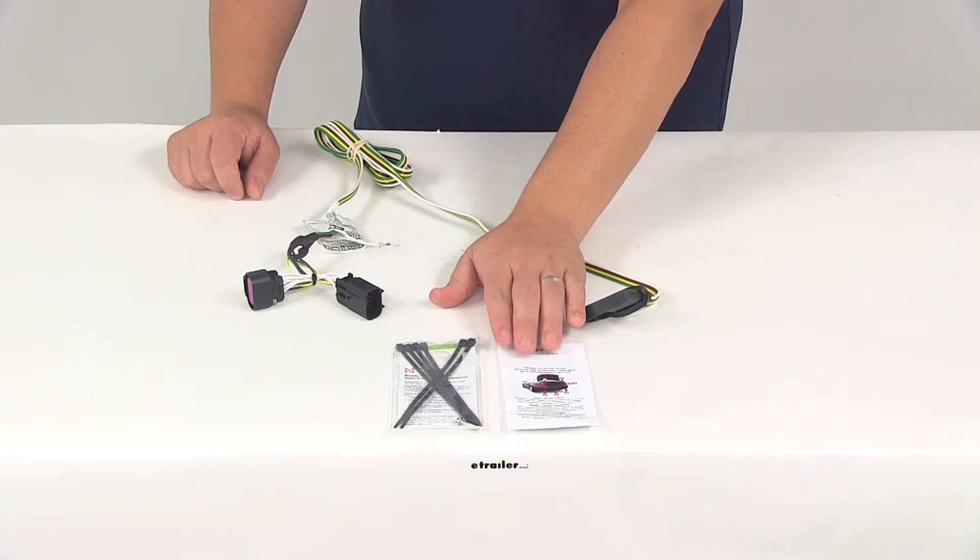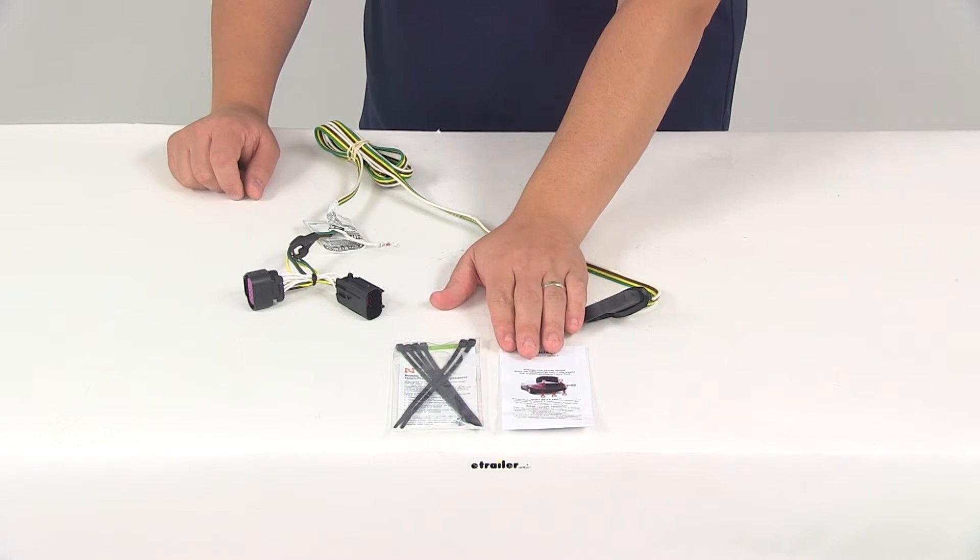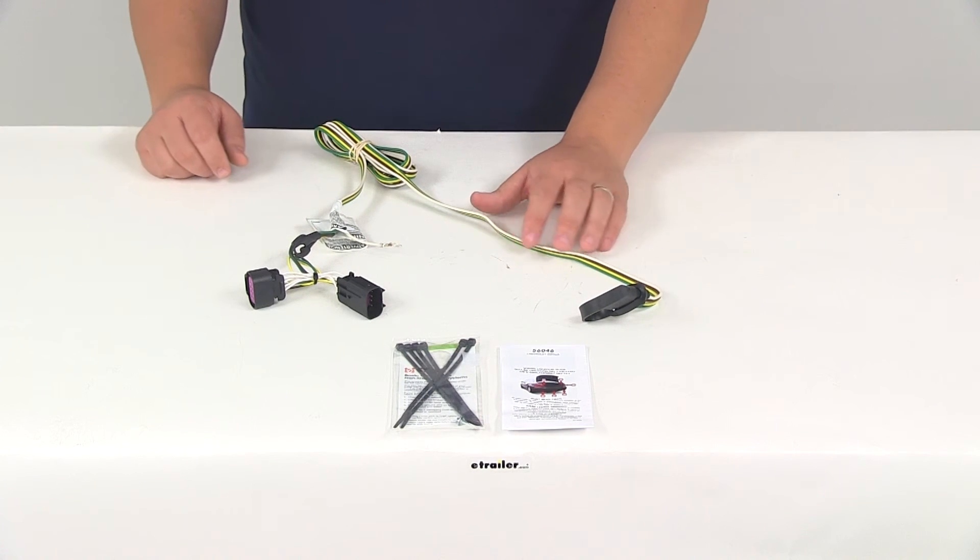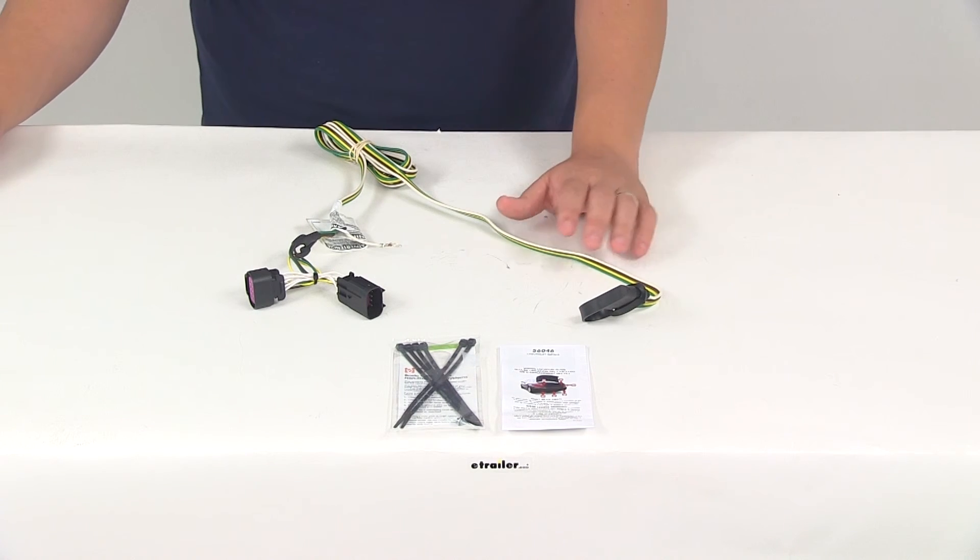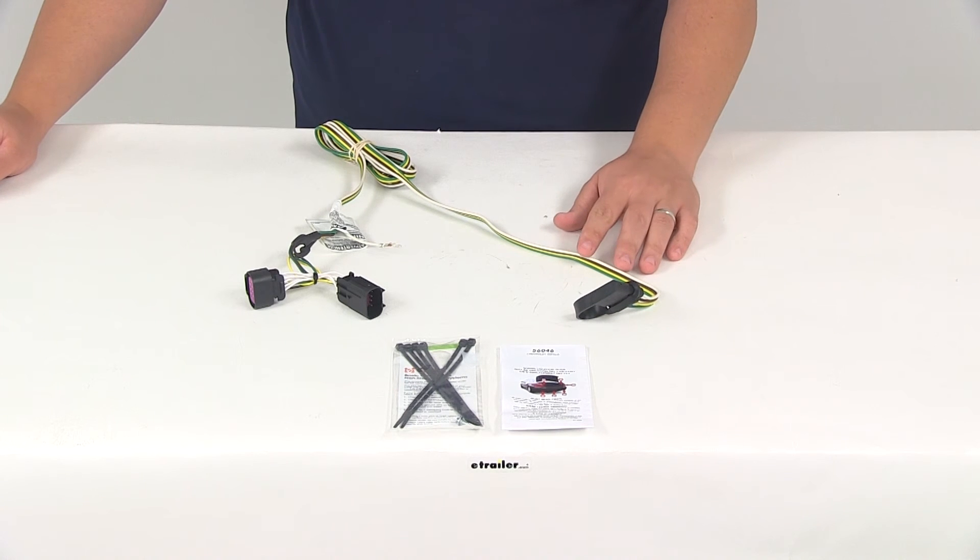It comes with detailed instructions that walk you through the installation process step-by-step. We recommend that you use a small amount of dielectric grease on all your electrical connections, like the plugs on the vehicle and the four-pole connector itself, to help prevent corrosion.